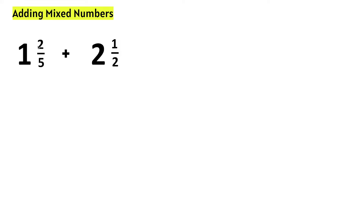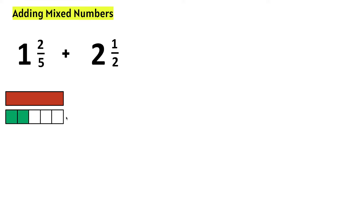Let's make a visual of one and two-fifths. One and two-fifths means one whole and two-fifths of another whole — two out of five pieces of another whole. So we have five equal parts and two of them are shaded.